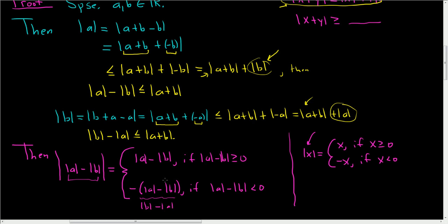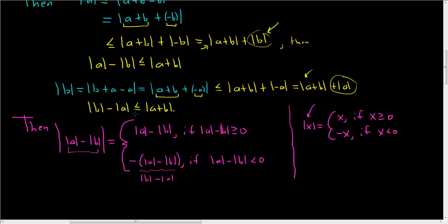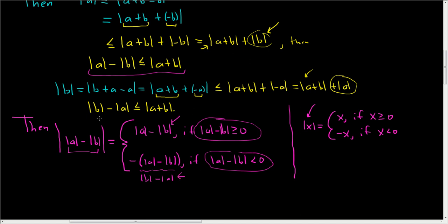This is why we are completely done. If the first case holds, we have |a| minus |b| and we know from earlier that it's less than or equal to |a plus b|. If the second case holds, we have |b| minus |a| and we also showed that it's less than or equal to |a plus b|. So in any case, the absolute value of (|a| minus |b|) is less than or equal to the absolute value of a plus b.